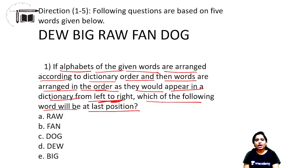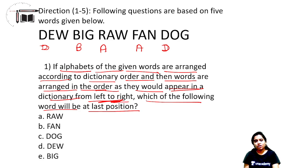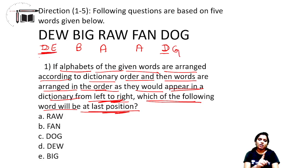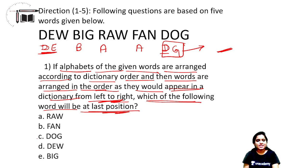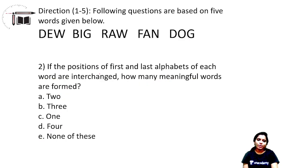First we have to arrange the alphabets of the given words within each word, then arrange words as they appear in a dictionary. For example, writing only one alphabet reference: B, D, B, A — then again A, D. What they're asking is which will be the last position in dictionary order. The last position means D, and the next letter is G here, next letter is E — this comes at the fourth position. D-O-G comes at the last position, so option C is the correct answer.